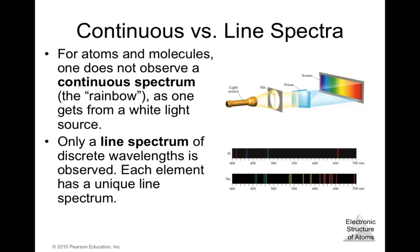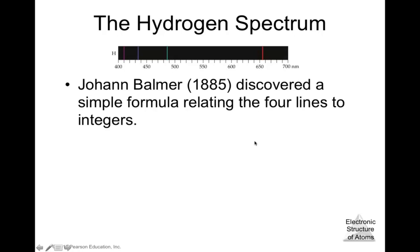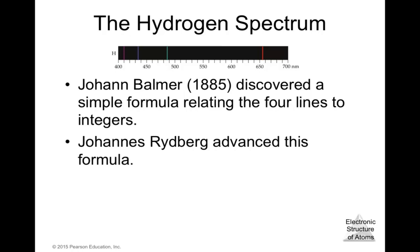Why does this happen? For hydrogen, which has just four lines, Johann Balmer in 1885 discovered a simple formula relating the four lines to integers. Johannes Rydberg advanced this formula, establishing that 1/λ = R_H × (1/n₁² − 1/n₂²), where R_H is the Rydberg constant. Niels Bohr then explained why this mathematical relationship works — the n values represent energy levels where electrons reside.